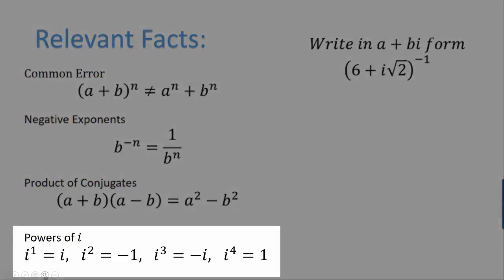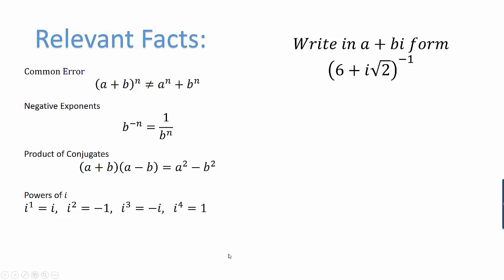And finally, we need to remember that when we raise i to powers, we get the following results. i to the first power is just i. i squared is always negative 1. If we multiply i squared times i, we get i cubed, which gives us negative i. And if we multiply i squared times itself, we get i to the fourth. So negative 1 times negative 1 gives us 1 for i to the fourth. But for our purposes, we're only going to need to use i squared. So let's begin.